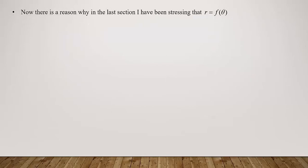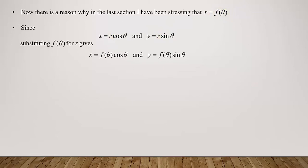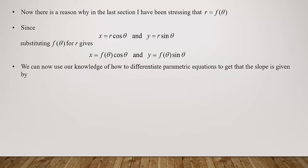So how do we find tangent lines if dr/dθ doesn't give the slope? In the last section we reviewed conversions from polar to rectangular: x = r cosθ and y = r sinθ. If we substitute r = f(θ), we get x = f(θ)cosθ and y = f(θ)sinθ — this looks like parametric equations. We can use our knowledge of differentiating parametric equations to determine slope in the polar world.